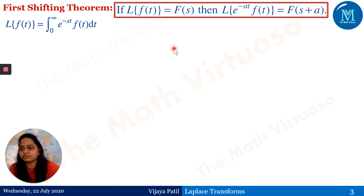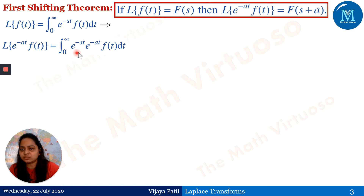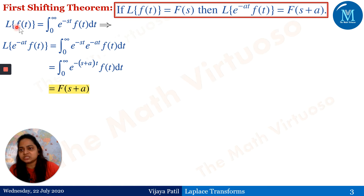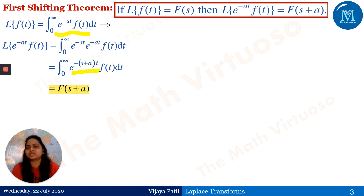We'll just walk through the proof — it's a very simple proof. By the definition of the Laplace transform, Laplace of e^(-at)·f(t) is the integral from 0 to infinity of e^(-st) times e^(-at) times f(t) dt. The exponentials combine to give e^(-(s+a)t)·f(t) dt, and by definition this is nothing but F(s+a). So it's a very simple property and proof.